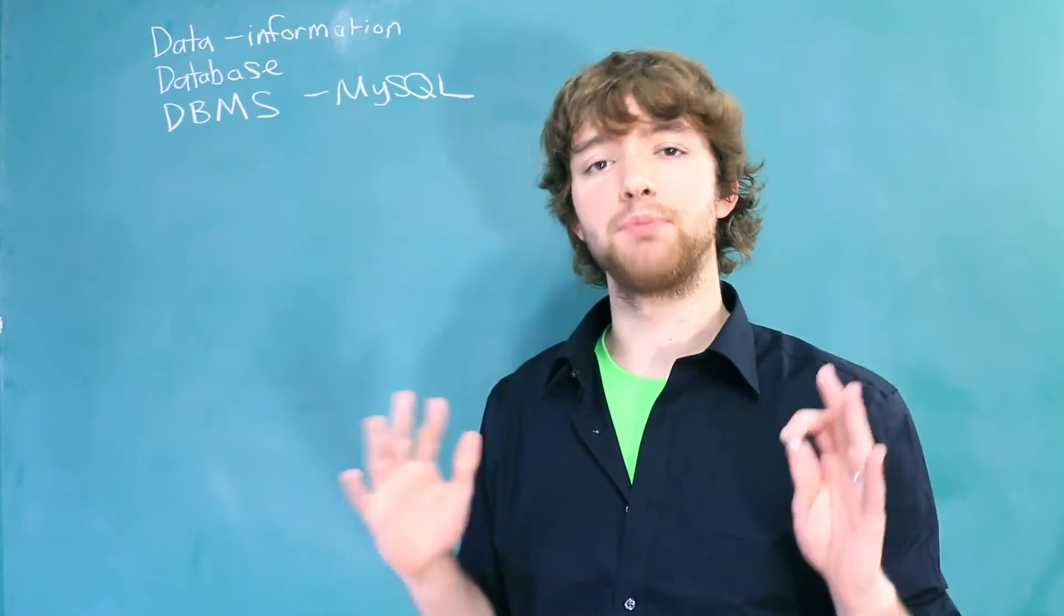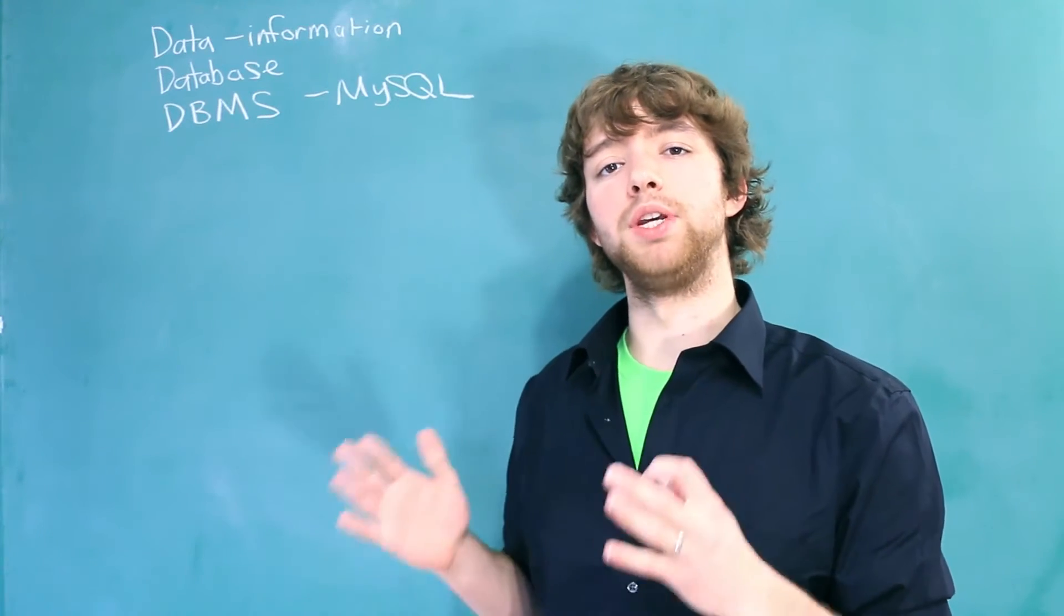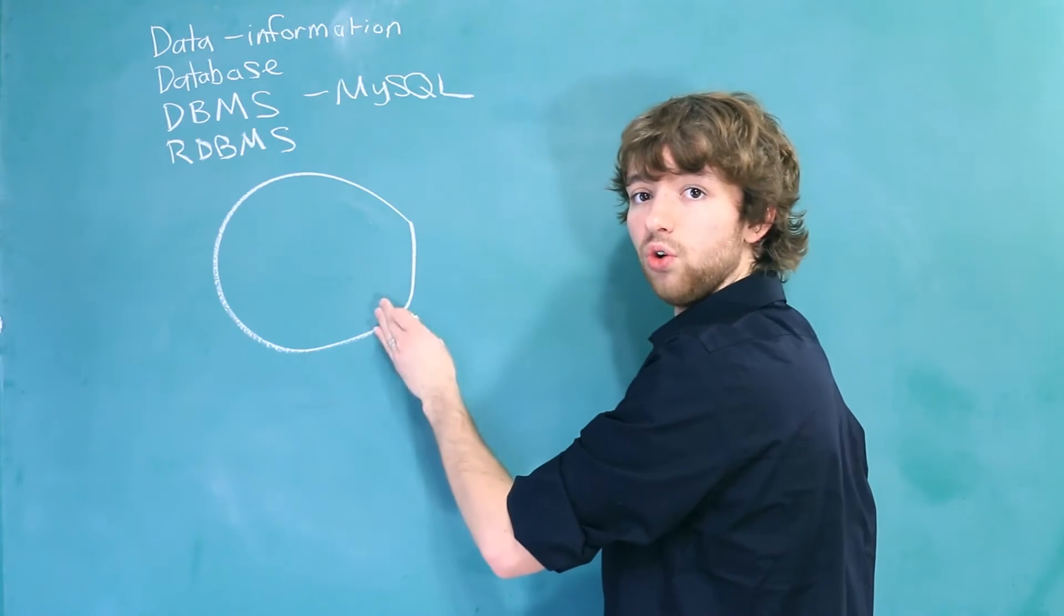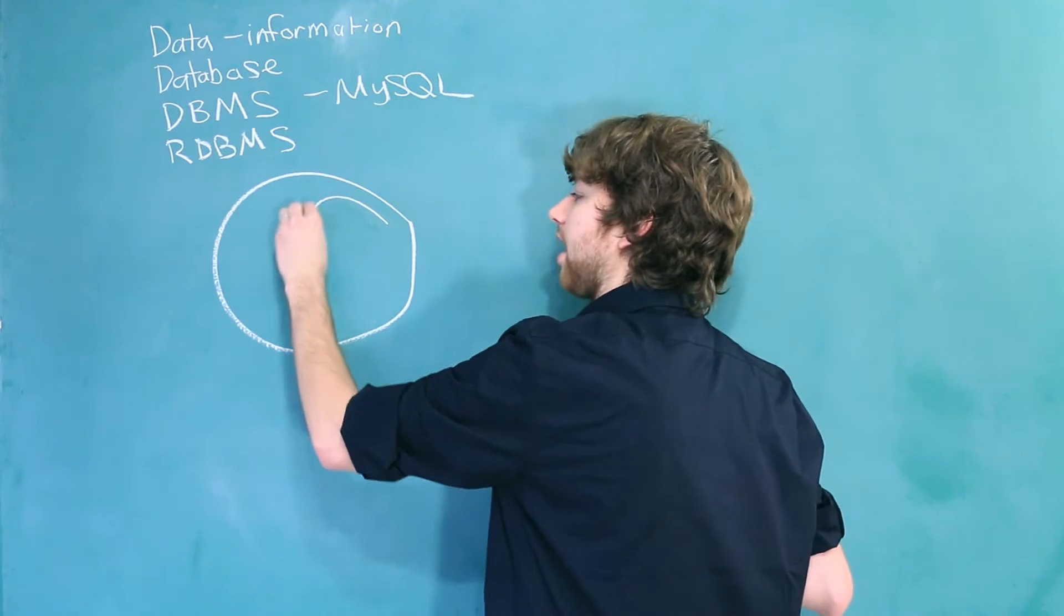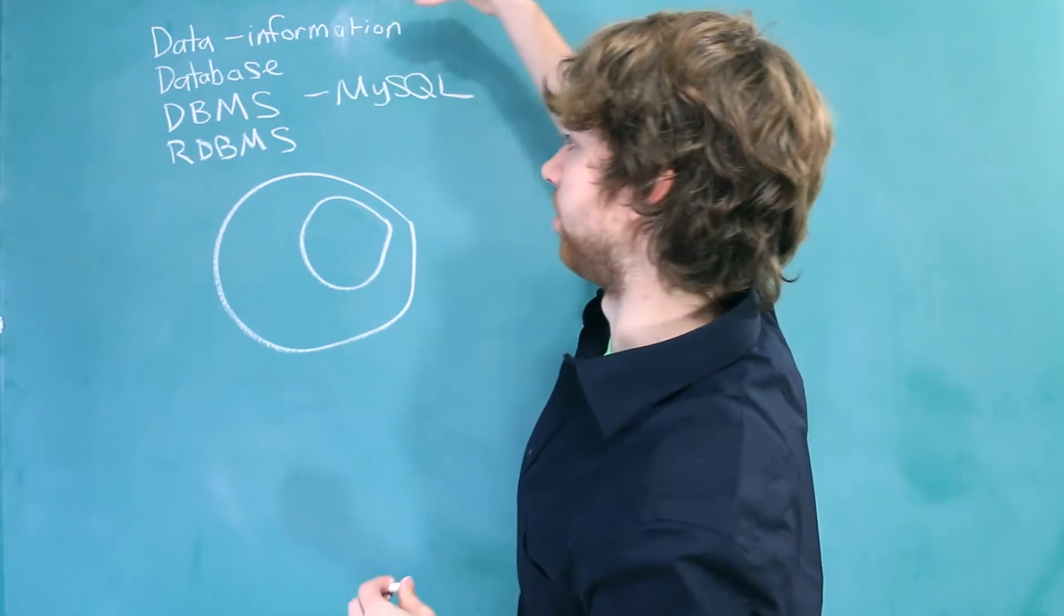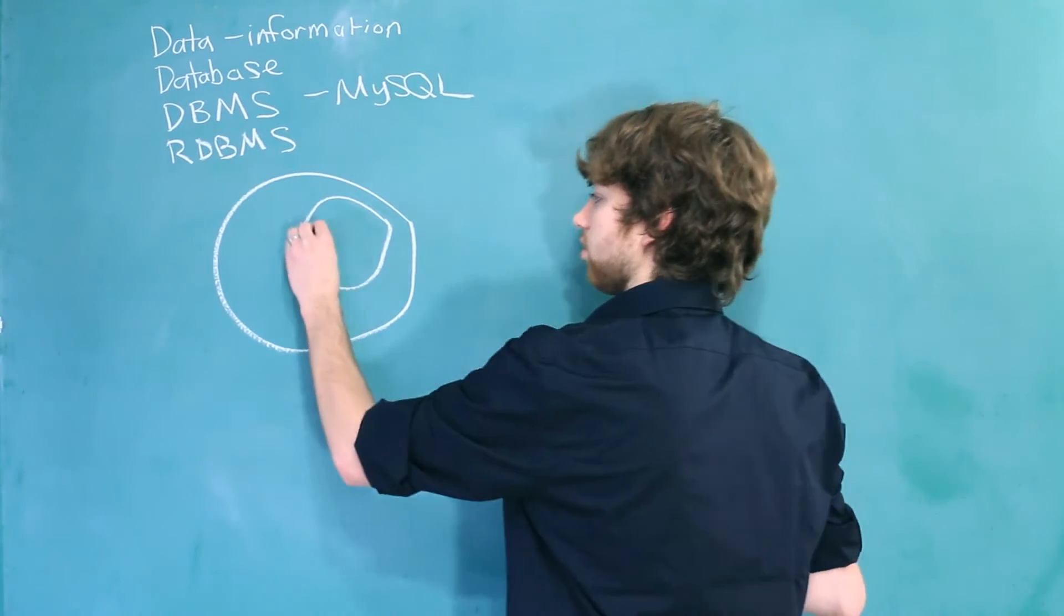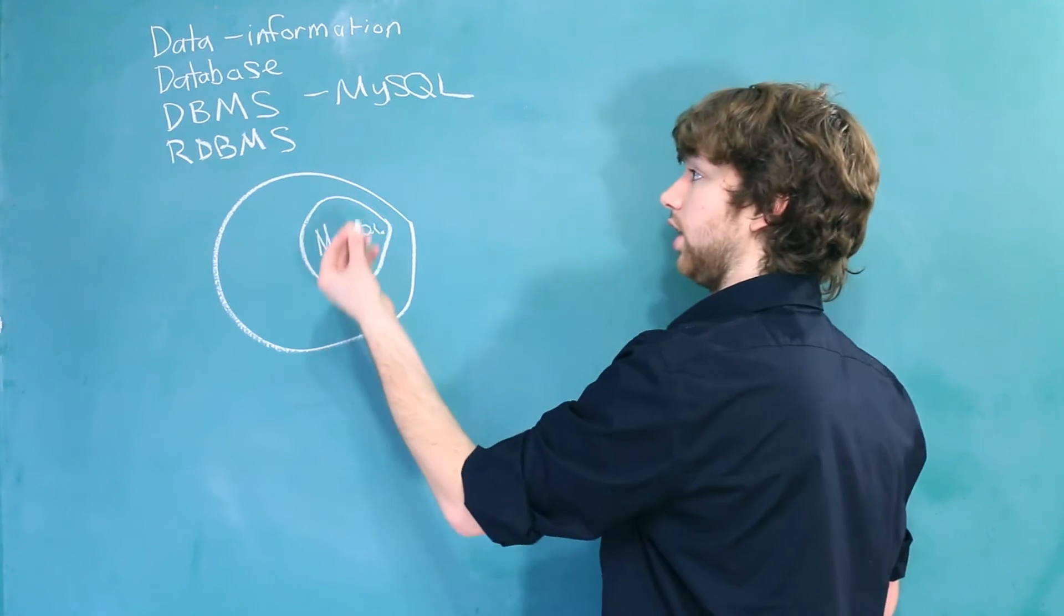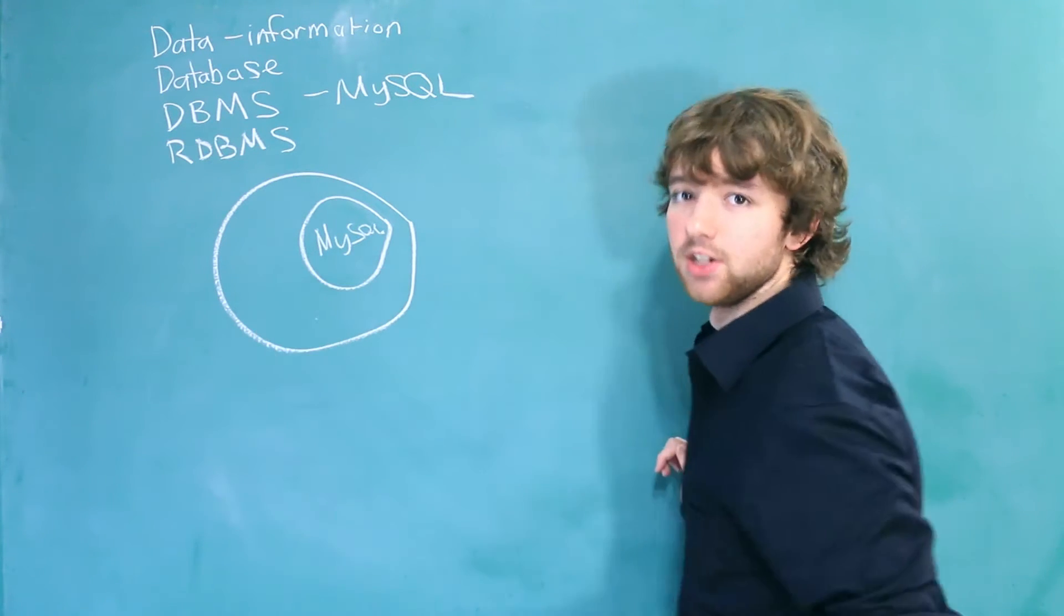Now, if you took every single database management system, a subset of those would be called relational database management systems. So think, this circle represents database management systems. Inside of that, we have relational database management systems. Now, MySQL is also an example of a relational database management system. So if we had MySQL right here, not only is it a relational database management system, but it's just a general database management system.